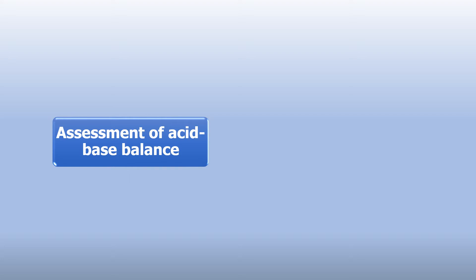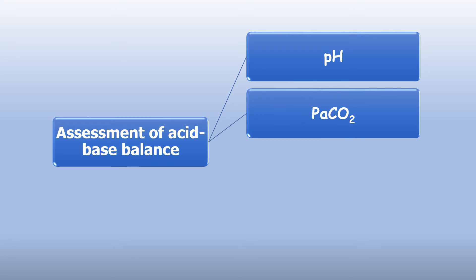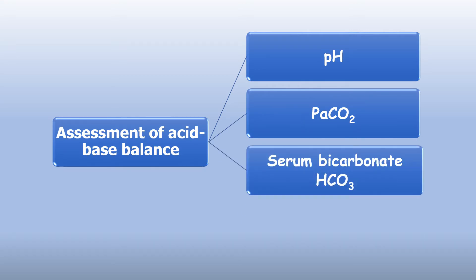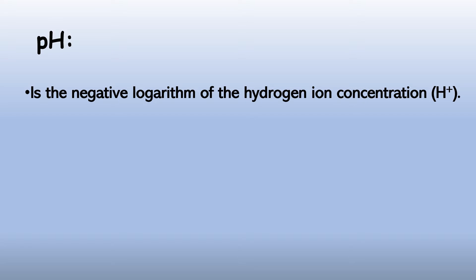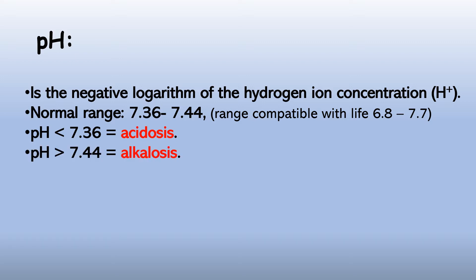Assessment of acid-base balance should be assessed by evaluating the pH, the PaCO2, the serum bicarbonate, and the base. The pH is the negative logarithm of the hydrogen ion concentration. Normal range is between 7.36 to 7.44. The range compatible with life is between 6.8 to 7.7. If pH is less than 7.36, it is called acidosis. If pH is more than 7.44, it is alkalosis.